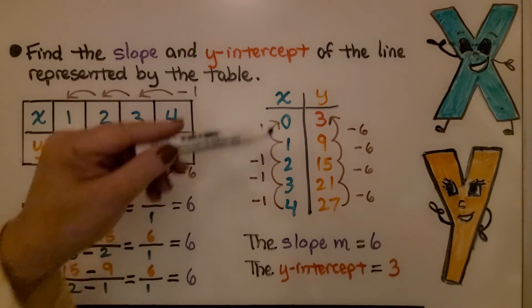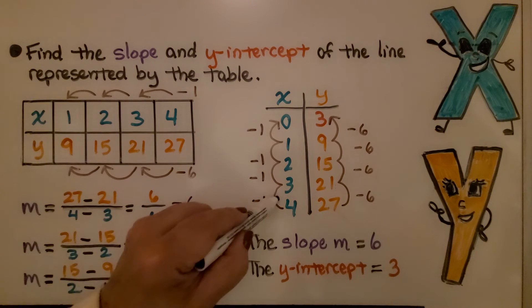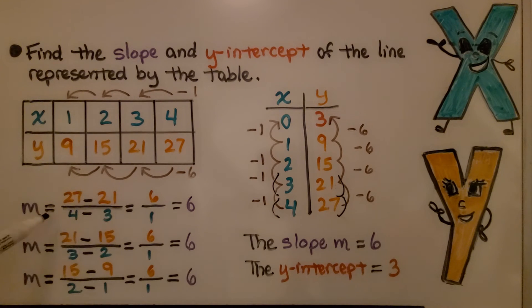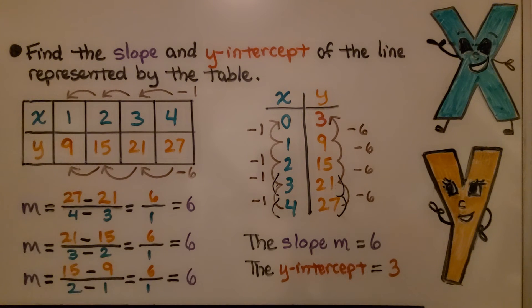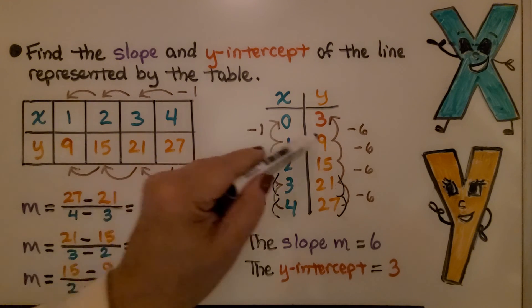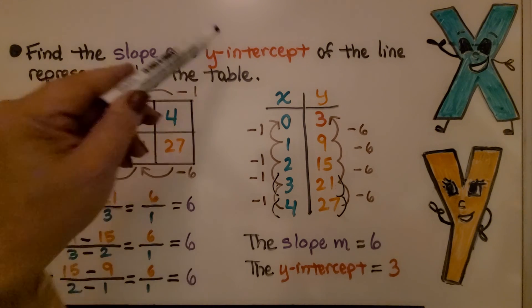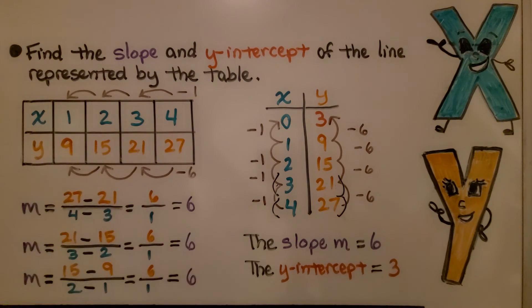I like to write my table of values vertically because then I can see the ordered pairs. Then I can use the slope formula very easily. This would be our second and this would be our first ordered pair. We can do 27 minus 21 over 4 minus 3. That's a 6 for our rise and a 1 for our run, which simplifies to a slope of 6. And we do it for the other numbers. We do 3, 21 and 2, 15 and we get a slope of 6. And when we do 2, 15 and 1, 9, we get a slope of 6. So we know the slope m equals 6. And the y-intercept of the line is the y value when x is 0. We know the y-intercept equals 3.